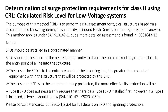In this video I will go through how to do the calculation for the determination of surge protection requirements for a Class 2 surge protection device using the calculated risk level, for low voltage systems. The purpose of this method is to perform a risk assessment for typical structures based on a calculation of known lightning flash density — the ground flash density for the region should be known. This method applies under SANS 10142-1, with more details in IEC 61643-12.